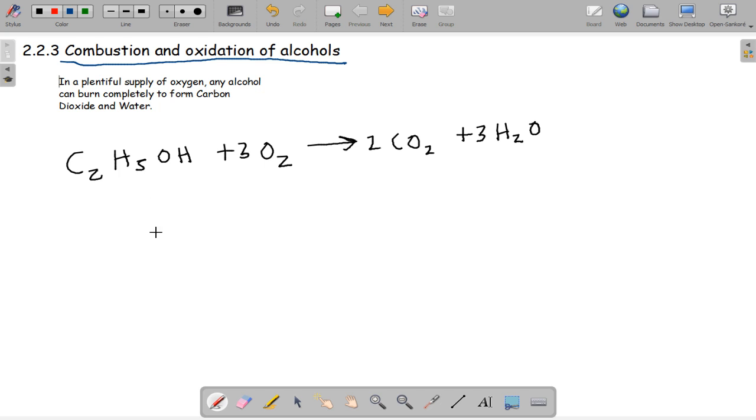Whenever an alcohol combusts, it needs to be in a plentiful supply of oxygen and burns completely to form products carbon dioxide and water. So for ethanol: C2H5OH plus 3O2 gives 2CO2 plus 3H2O.